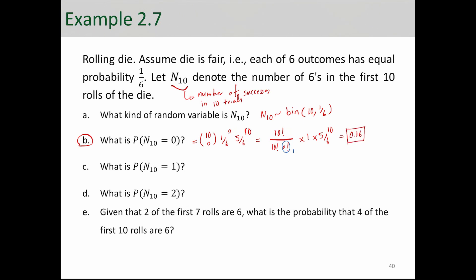So there's 16% chance that you get 0 sixes in 10 rolls of this die. What is the probability of 1 success in 10 rolls? Well, that is 10 choose 1, 1/6 to 1, 5/6 to 9. And here 10 choose 1 is when you cancel these two with each other, you're left with 10 up there and you have 1 in the denominator. So it's 10. That is 0.323.